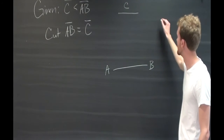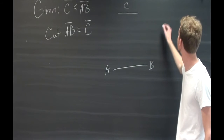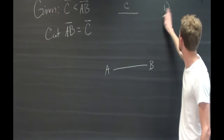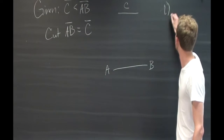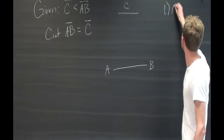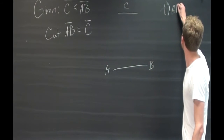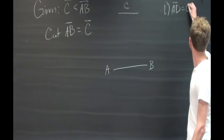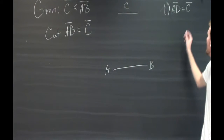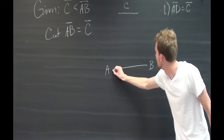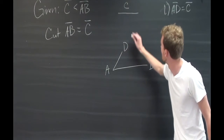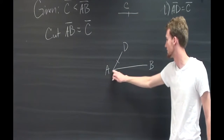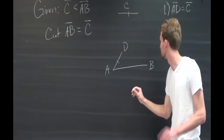First thing we're going to do is construct a line AD which is going to be equal to C. As long as it's touching A, no matter what angle it's at, it's all good.